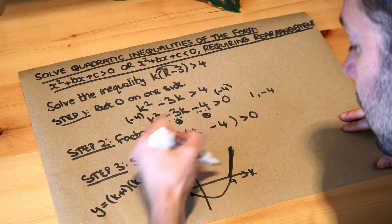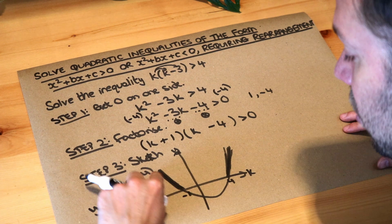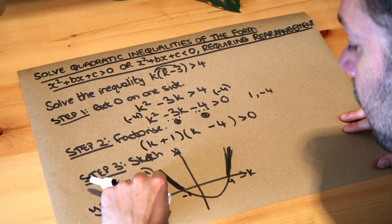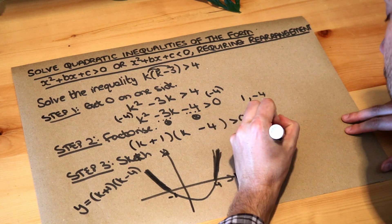And then once we've identified those bits of the line, we just say what can we say about k in this region? Well anywhere on this line, the k value is less than minus one. So we've got k is less than minus one.